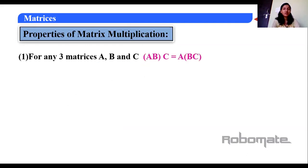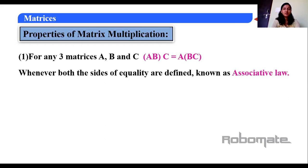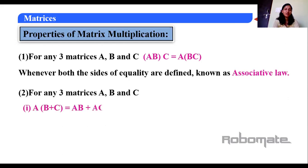The first property: for any three matrices A, B, and C, (A·B)·C = A·(B·C). This is the associative law. So A·B·C grouped either way gives the same result.